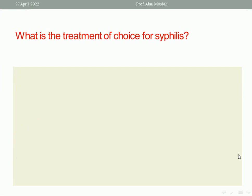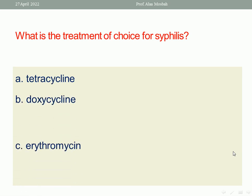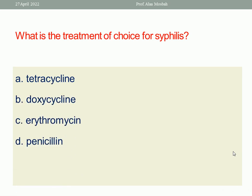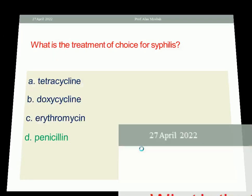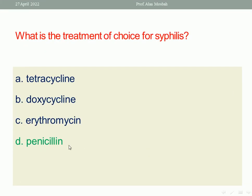What is the treatment of choice for syphilis? Tetracycline, doxycycline, erythromycin, or penicillin. Of course, penicillin is the first choice. If there is allergy to penicillin, we can go to the alternative. So penicillin is the first choice for treatment of syphilis.